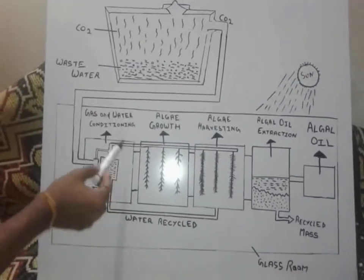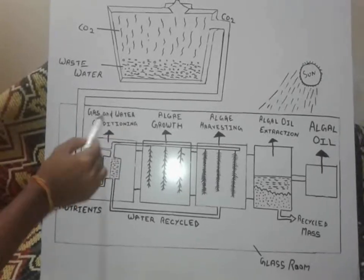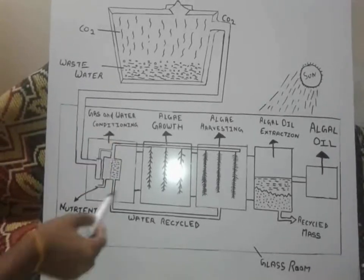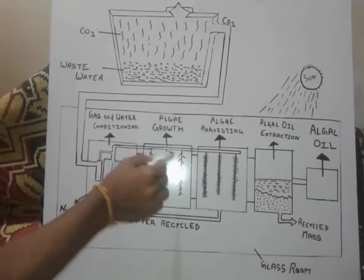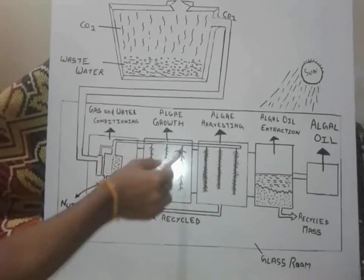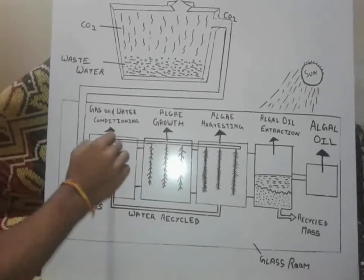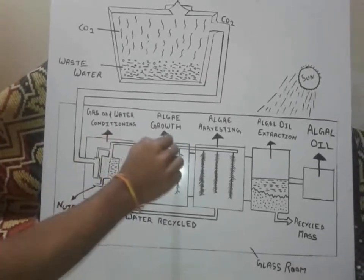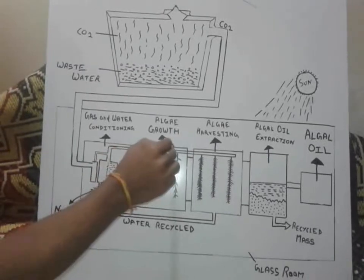The first container is the gas and water conditioning. The second container is algae growth. In this, algae will grow, and from this pipe, nutrients will be supplied.